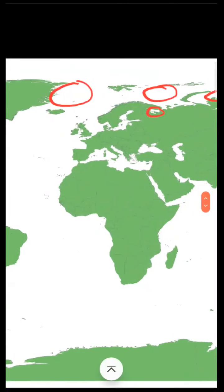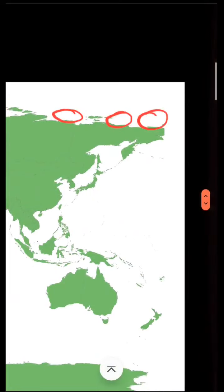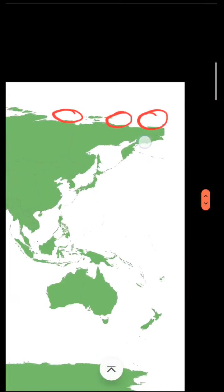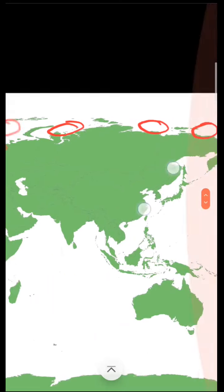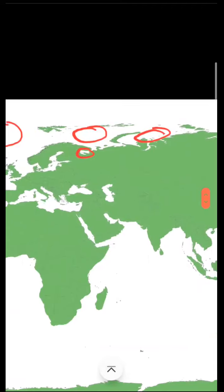Let me show you seas in the Arctic Ocean. First one is Chupchi Sea. Next one is Siberia Sea. Third is Lapteve Sea. Fourth is Cara Sea. Fifth is Barents Sea.